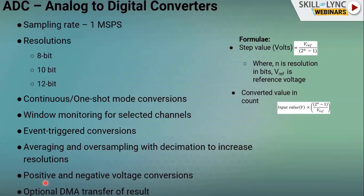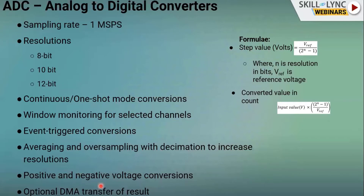In older controllers, only positive voltages could be converted. In real-time scenarios, negative voltages can occur from external inputs. Feeding negative voltage into an older controller could damage it, requiring an inversion circuit. Modern ADC converters support negative voltage conversion — they can directly accept negative voltages on the analog pin and return a signed output value.